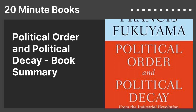Political Order and Political Decay is a must-read for those interested in understanding the evolution of the American political system over time. American voters eager to delve into the root causes of their government's issues will find this book enlightening. Moreover, political science students seeking a solid introduction to the intricate aspects of democracies will greatly benefit from this episode's book. Join us as we uncover the intriguing truths about the American political landscape as outlined in Francis Fukuyama's Political Order and Political Decay.